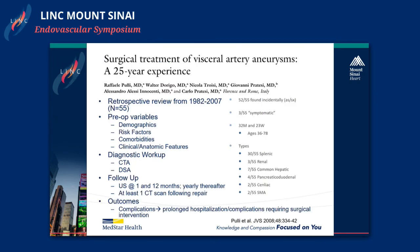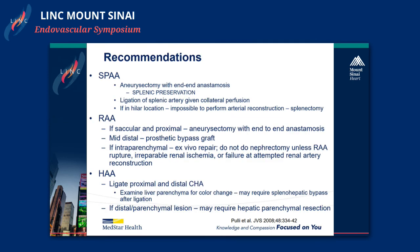I'm going to quickly go through two studies. This was a retrospective review in 2008 looking at about 55 patients, giving some recommendations as to how to manage them. 52 were found incidentally; 30 out of 55 were splenic, then renal, common hepatic, and so on. Their recommendations were similar to what I've mentioned: for splenic artery, you can ligate if in the proximal location, and splenectomy is recommended more distally. As far as renal artery aneurysms go, they recommend don't do a nephrectomy unless your patient is unstable, has had a rupture, or there's a failed attempt at reconstruction. For the hepatic artery, you can ligate the common hepatic artery, but you do need to examine the liver, and if it doesn't look good, you may have to do a bypass.